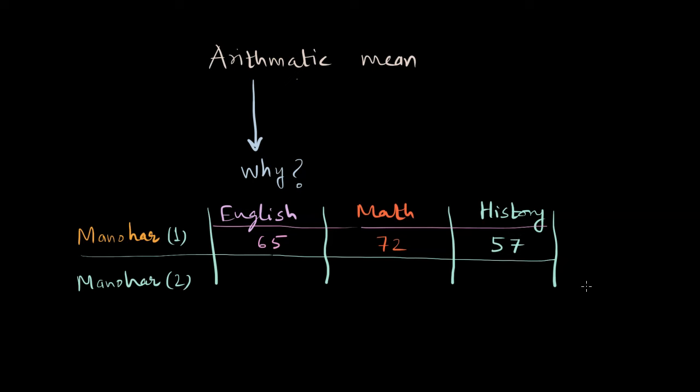Let's see after term one how his performance improved or was there any improvement at all. Manohar scored 73 in English, in math he scored 75, and in history his performance actually dipped so he could just score 40. Now the question is did Manohar really improve his performance?